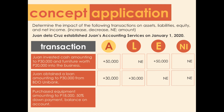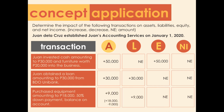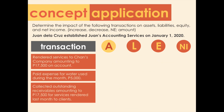Transaction three: purchased equipment amounting to 18,000 pesos — 50% down payment, balance on account. This results in a net increase of 9,000 in assets (increase of 18,000 due to equipment, partially decreased by the down payment of 9,000), and also an increase of 9,000 in liabilities for the unpaid balance.